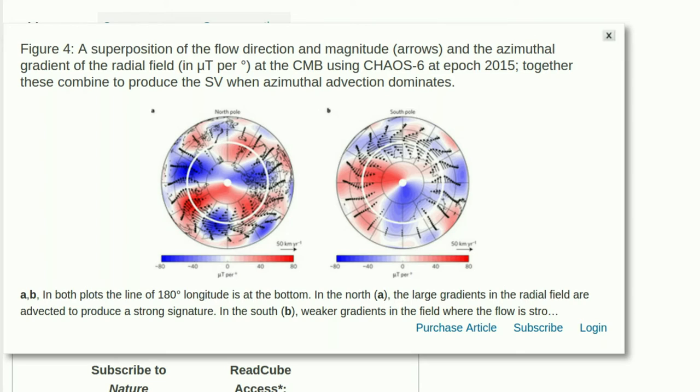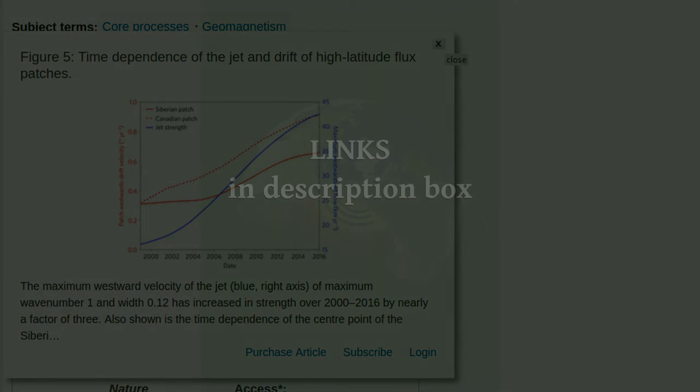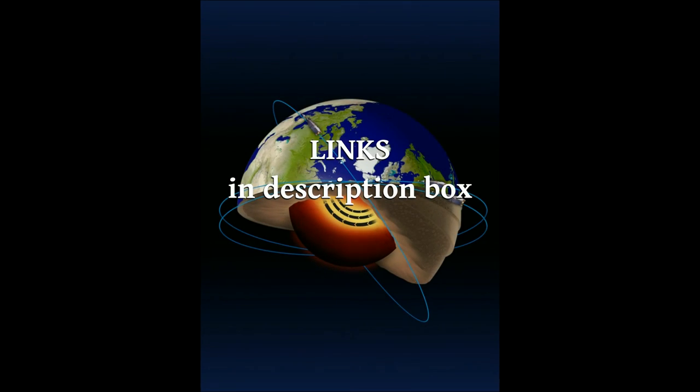This molten jet stream might be caused by buoyant forces in the Earth's core, or variations in the magnetic field within the core.